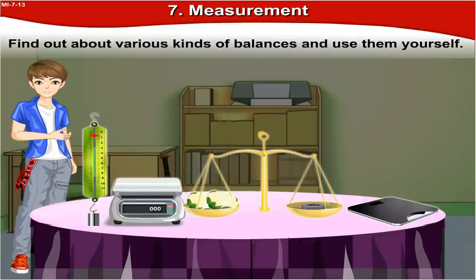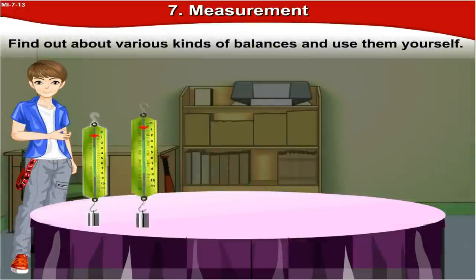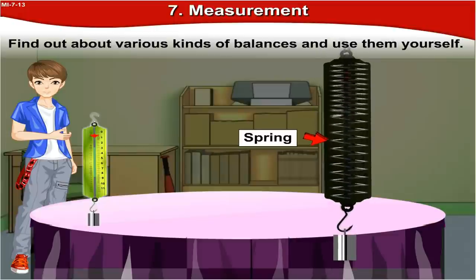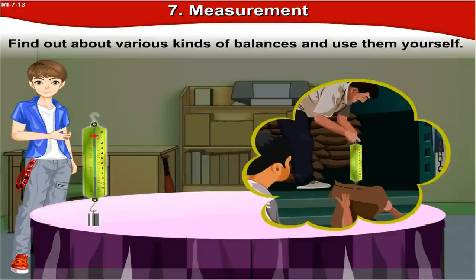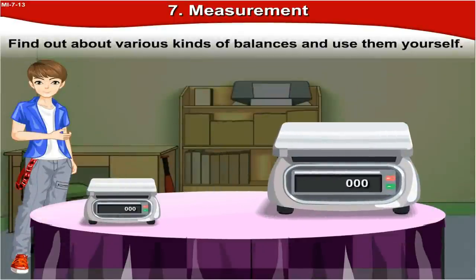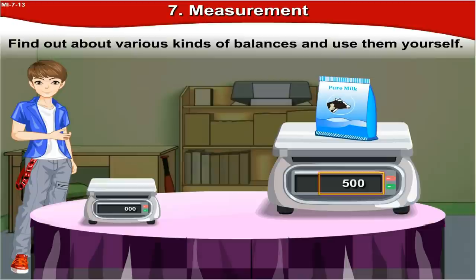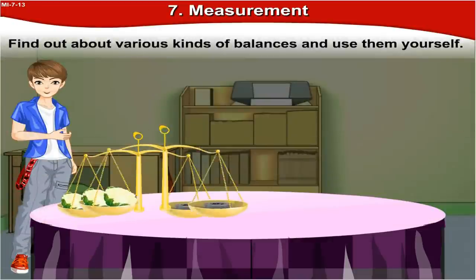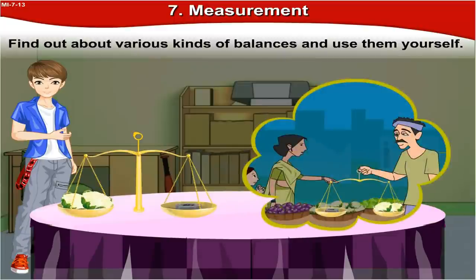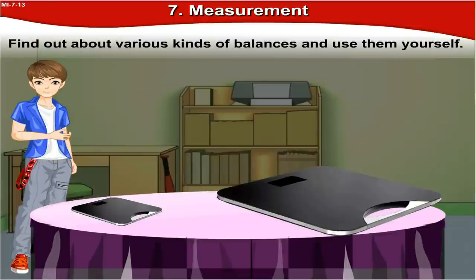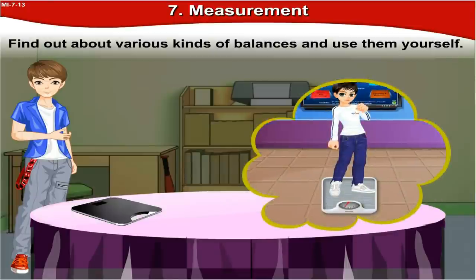Find out about various kinds of balances and use them yourself. First, the spring balance — it has a spring inside and is used to weigh a sack of food grains. Next, the electronic balance — a digital balance where the weight appears in written form as digital numbers. Then the common balance, found at fruit and vegetable sellers' shops. And lastly, scales for body weight, which you use when weighing yourself.